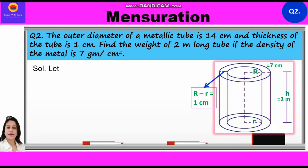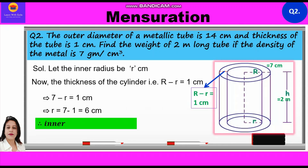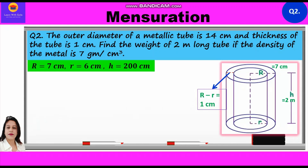Let the inner radius be r cm. Thickness = R − r = 1 cm. Substituting: 7 − r = 1, so r = 6. Inner radius r = 6 cm. So outer radius = 7 cm, inner radius = 6 cm, height = 200 cm.